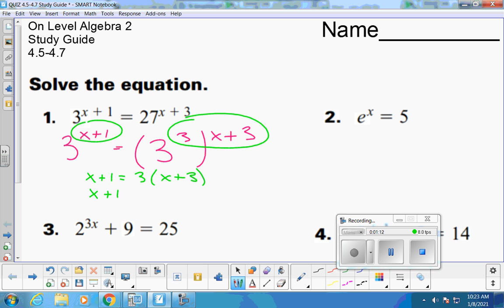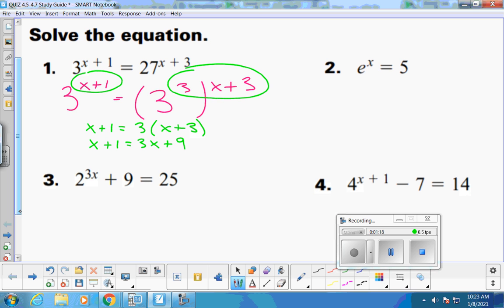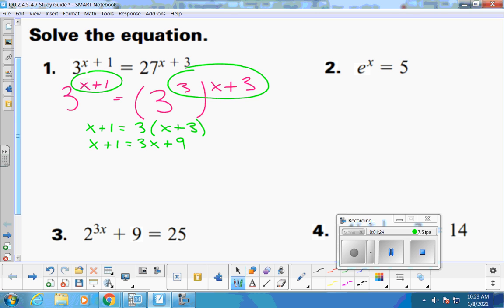So we'll have x plus 1 equals 3x plus 9. You can subtract the 1x over to join the 3x. And that would be a 2x over there. And then we can move the 9 over to join the 1, subtract it over and get negative 8, and finish by dividing by 2. Did everybody get negative 4?